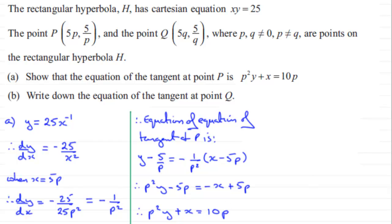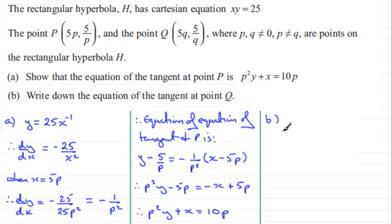In part b, we've got to write down the equation of the tangent at the point Q. Because the pattern and structure here is exactly the same, only replacing p with q, the equation of the tangent at Q is clearly q²y + x = 10q.